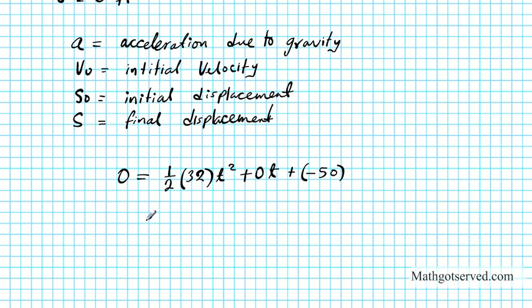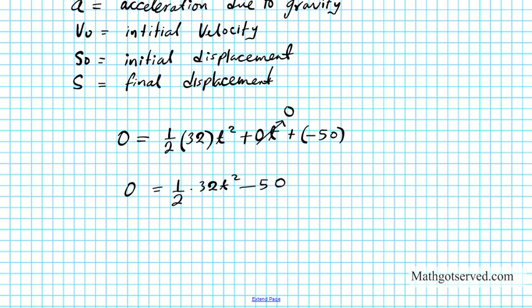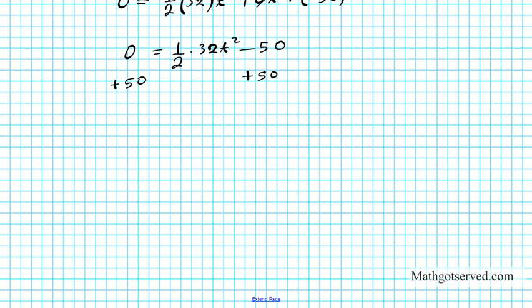So, that's going to leave us with equation 0 equals 1 half times 32 t squared. This multiplies out to 16 t squared minus 50. Simplify further. We can add 50 to both sides. So, add 50 to both sides. And that gives us 50 equals 16 t squared.